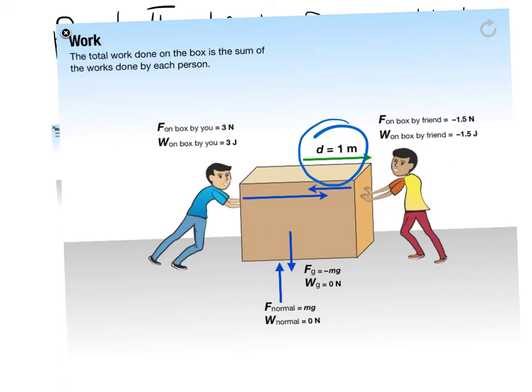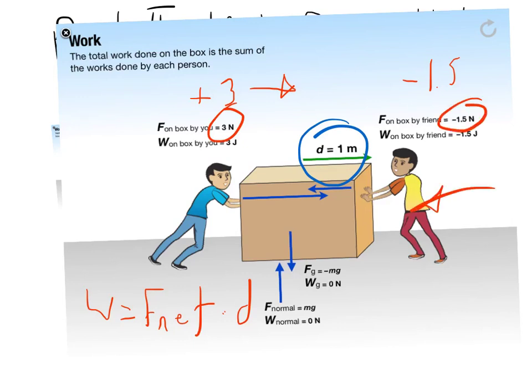So if we assume the distance covered, we'll start there, is one meter. Well, this person's going to do a positive three joules of work, because it's in the same direction as motion. This guy is going to do a total of negative 1.5. Because it's in the opposite direction of motion. And so what you really end up with is you've got work equals your net force times distance. Because if you add these two together, well, it's going to be 1.5. That's the same thing. If you look at your net force a little bit this way, more that way, 1.5 times 1.